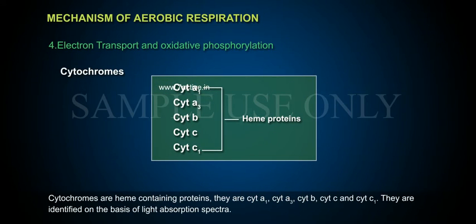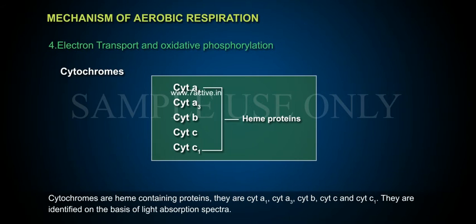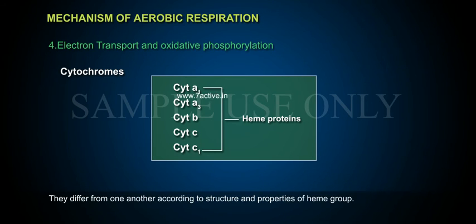Cytochromes are heme-containing proteins. They include site A1, site A3, site B, site C, and site C1. They are identified on the basis of light absorption spectra and differ from one another according to the structure and properties of their heme group.